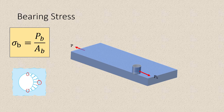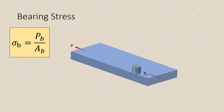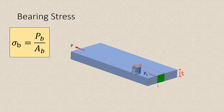However, the difficulty inherent in such a complicated stress distribution is avoided by the common practice of assuming that the bearing stress sigma_B is uniformly distributed over a reduced area. The reduced area we'll consider is the projected area of the rivet. Drawing lines from the sides of the bolt and two vertical lines parallel to the height of the bolt, this green area is the projected area of the rivet, where one dimension is the thickness of the plate and the other is the diameter of the rivet.